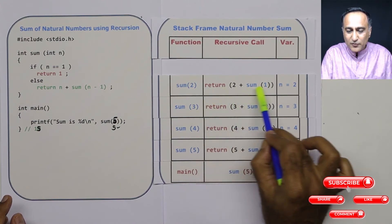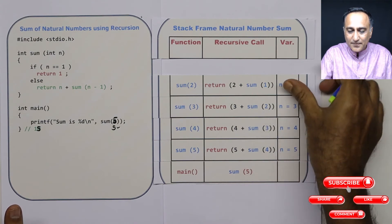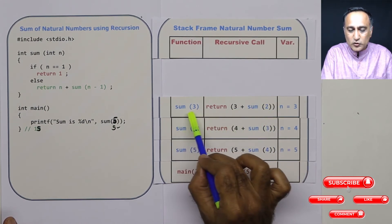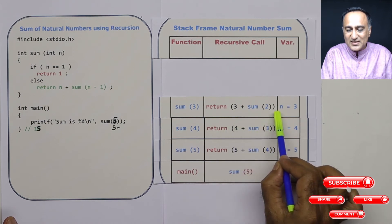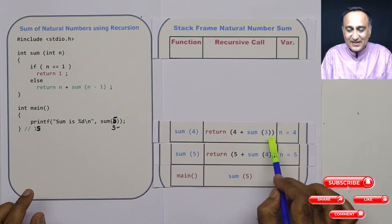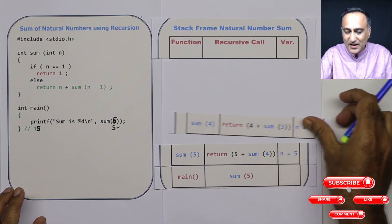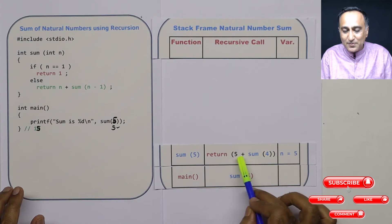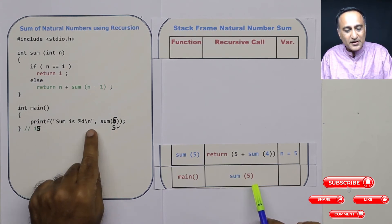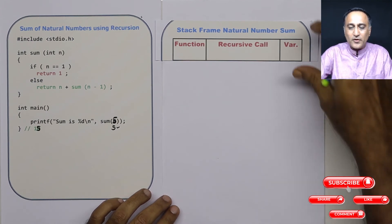Now 2 plus 1 is 3, so the sum of 2 calculation is done because sum of 1 is 1, giving 2 plus 1 equals 3. This 3 is returned, and sum of 2 is replaced with 3. Since I know sum of 2 is 3, then 3 plus 3 is 6, so I have also solved sum of 3. This returns 6. That 6 comes here because sum of 3 is here. Now 4 plus 6 is 10, which helps me find the sum of natural numbers from 1 to 4 is 10. Since it is calculated, I am popping this record. Now sum of 4 is 10, and 10 plus 5 is 15. So 15 is the final value, and that return value gets returned in main and gets printed. This was using the stack frame to show how sum of numbers from 1 to n was calculated.